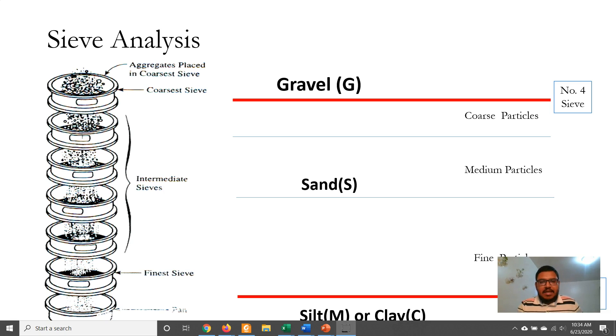If maximum soil particle retained on number 4 sieve, then the soil can be classified as gravel. For sand, the soil will pass through number 4 sieve and will retain on number 200 sieve. For clay and silt particles, it will pass through number 200 sieve.